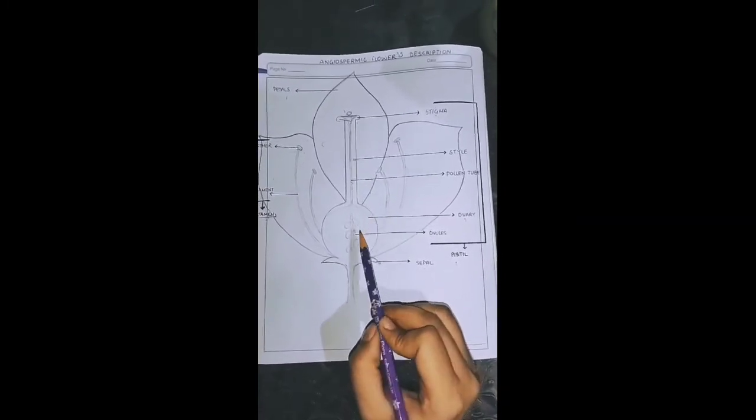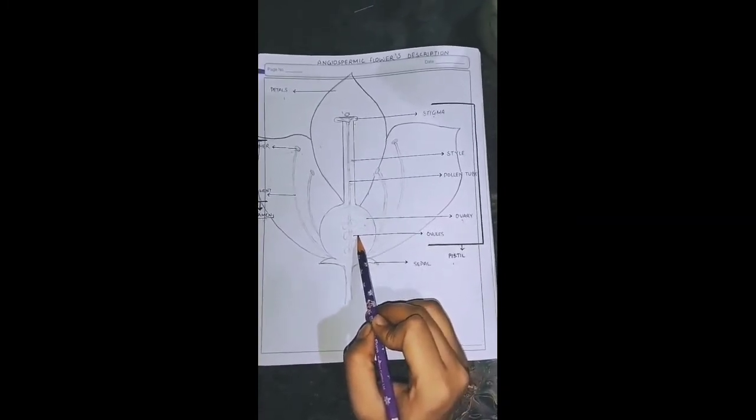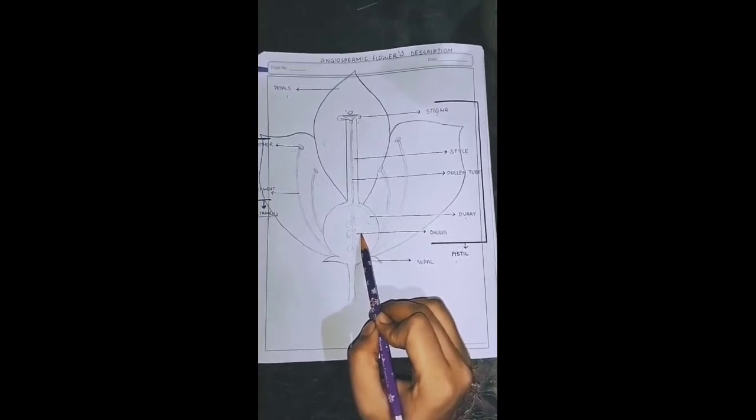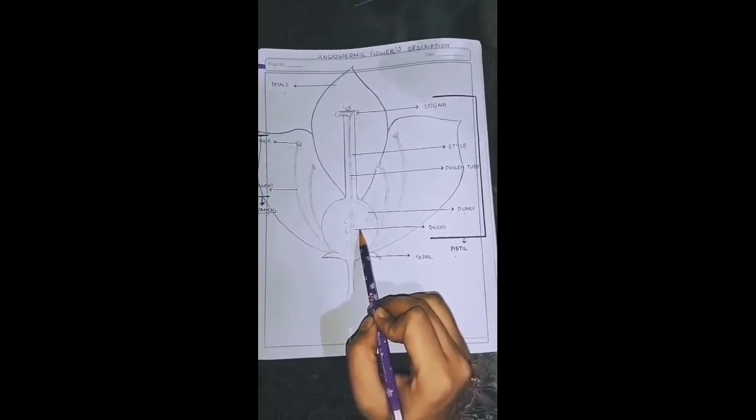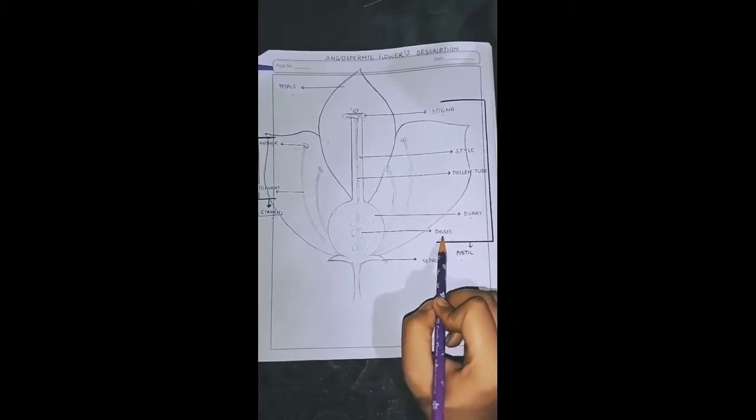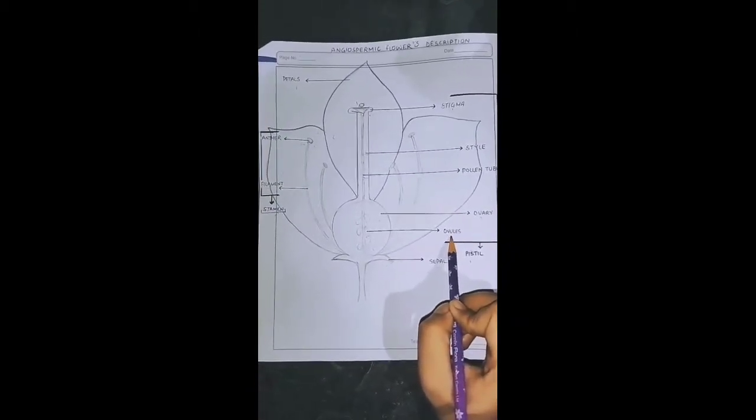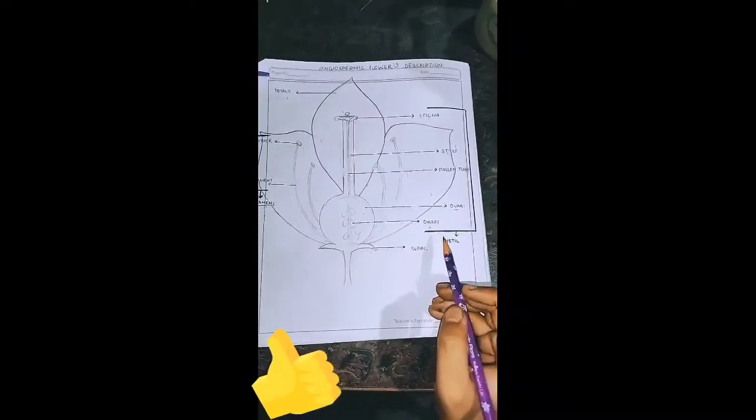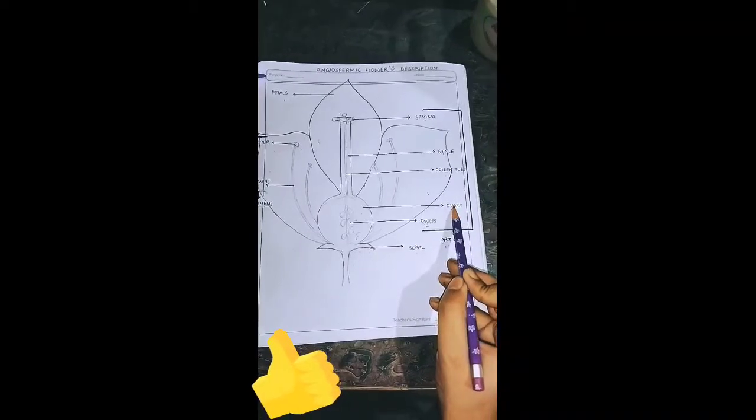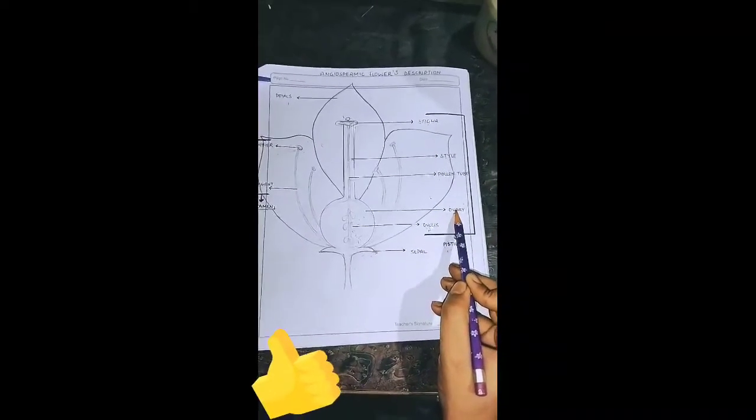The female gamete is present in the ovule and the ovule is present in the ovary. If we talk about the post-fertilization event, the ovary becomes our fruit and the ovule becomes our seed.